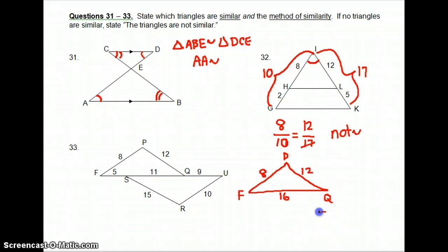And then the bigger triangle on the bottom is SRU, and we've got 15, 10, and the top is 9 plus 11, which is 20.